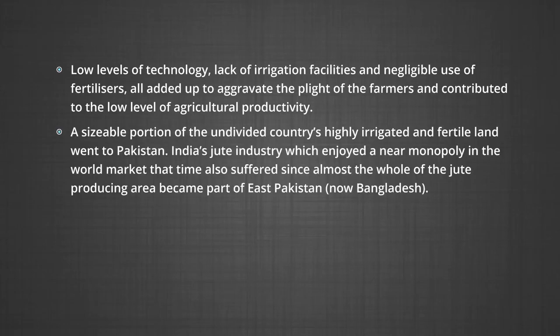The Zamindars were asked to collect and deposit a fixed amount of revenue, failing which they were to lose their status. So the Zamindars put all their efforts, including use of force, to meet the target of revenue collection rather than working for the development of poor farmers. Fifth, low levels of technology, lack of irrigation facilities and negligible use of fertilizer all added up to aggravate the plight of the farmers and contributed to low level of agricultural productivity. Sixth, a sizeable proportion of the undivided country's highly irrigated and fertile land went to Pakistan after independence. India's jute industry, which enjoyed a near monopoly in the world market, also suffered since almost the whole of the jute producing area became part of East Pakistan, now Bangladesh.